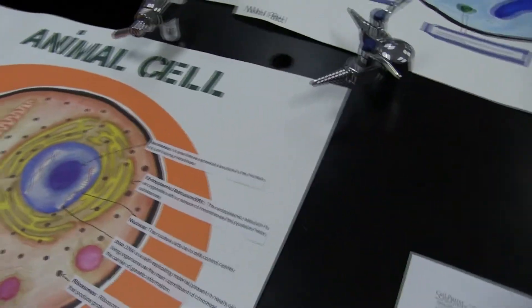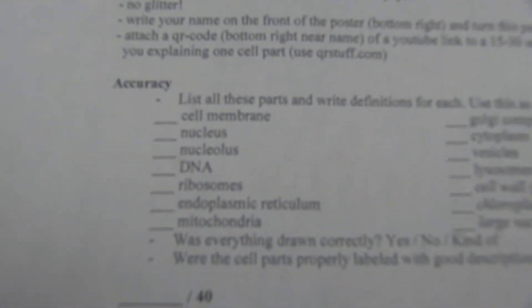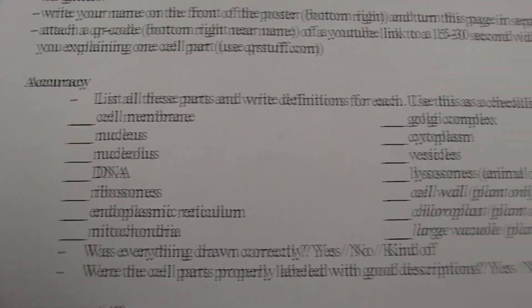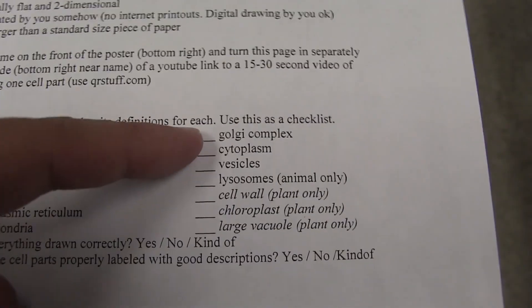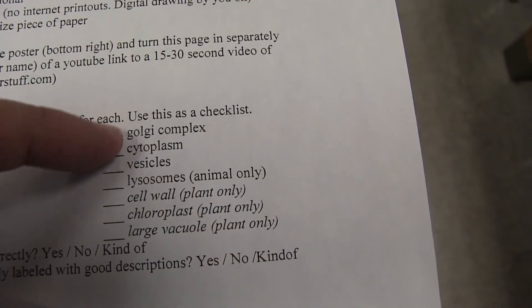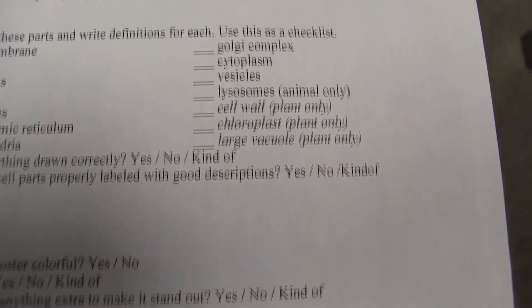So here's the twist on this assignment — you have to do four things. First, make your picture. Second, label each part. To know which parts to label, look at your rubric — it has a checklist of everything you need to include. For an animal cell, include all the listed organelles plus the lysosome. For a plant cell, skip the lysosome and add the cell wall, chloroplast, and large vacuole. Use the rubric as a checklist and check off each part as you go.